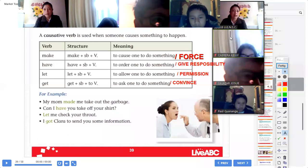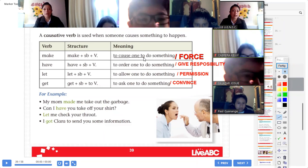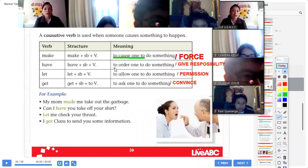Okay, everybody copy, please. Página 132. On make, to cause someone to do something. Hacer que uno haga algo significa esto. En pocas palabras, force, forzarle también. Next, have. Order someone, ordenar a alguien, or give responsibility. Next, let. To allow, or permission. Permitir, o dar permiso. Next, get. Convince, o ask. Pedir a alguien, o convencer a alguien de algo. Everybody copy, please, this in your English book.